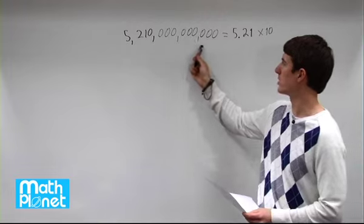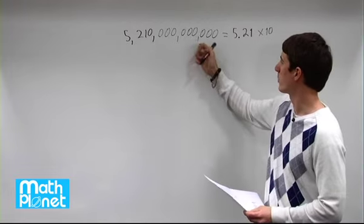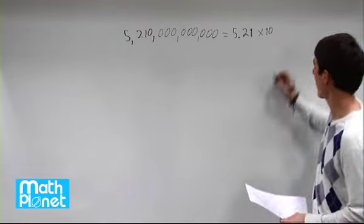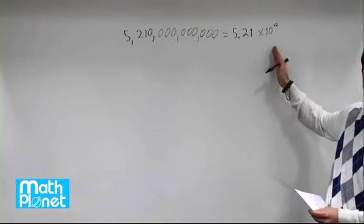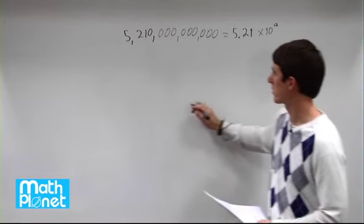The power is just the number of digits that we've moved back. So we have one, two, three, four sets of three, so that's a power of 12. So 5.21 trillion can be written like this. It's a much more concise way. This is scientific notation.